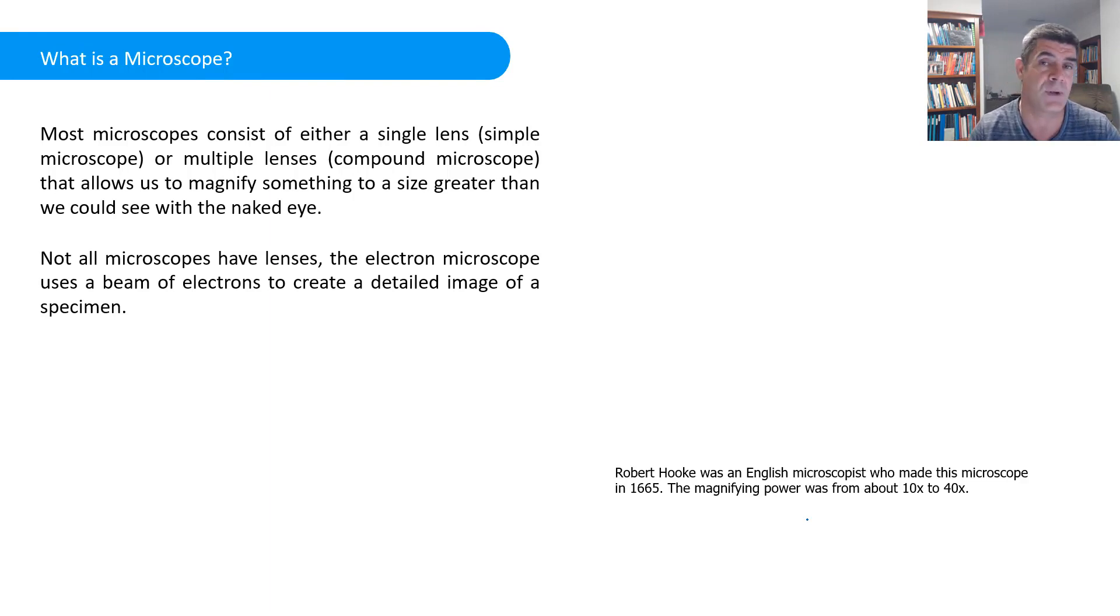That could be something as simple as a magnifying glass. A magnifying glass allows us to look at an object that's a little bigger than what it was before. It consists of a lens that is shaped in such a way that it allows us to make that image larger.